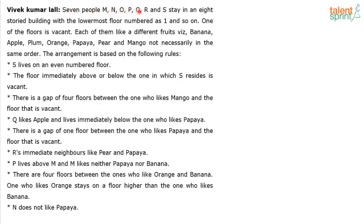7 people — M, O, P, Q, R and S — stay in an 8-storied building with the lowermost floor numbered 1 and so on. The lowermost floor is numbered 1, the floor above is number 2, number 3, and so on. One of the floors is vacant, so 7 people, 7 floors, and one floor is vacant — that makes it 8 floors.